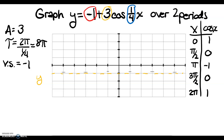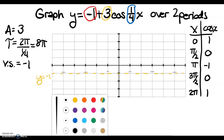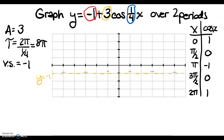I label my x-axis. There's no horizontal shift, so it starts at 0. I count 4 equal intervals and find the labels of the quartile and midpoints up to 8π. Since it's two periods, I also count 4 intervals backwards and label the midpoint and quartiles in the negative direction.